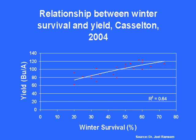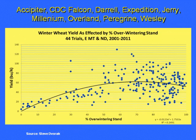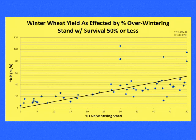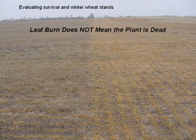Data shows that even with as low as 20% survival, yields up to 60 bushels are possible, indicating you'd probably want to keep that stand. Data from Steve Daborak over a range of varieties shows that about 30 to 40% stand in the spring is the critical level — below that you should consider tilling up and planting something else. Above 55%, it's generally not problematic.